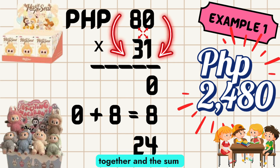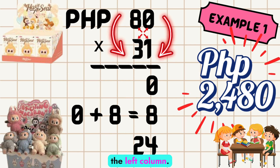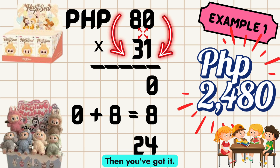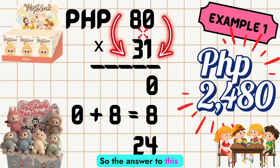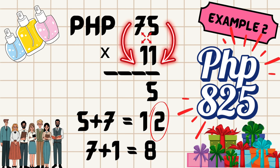Add these two together and the sum is 8. Now let's move to the left column: 3 times 8, which equals 24. So the answer to 31 times 80 is 2,480 pesos.